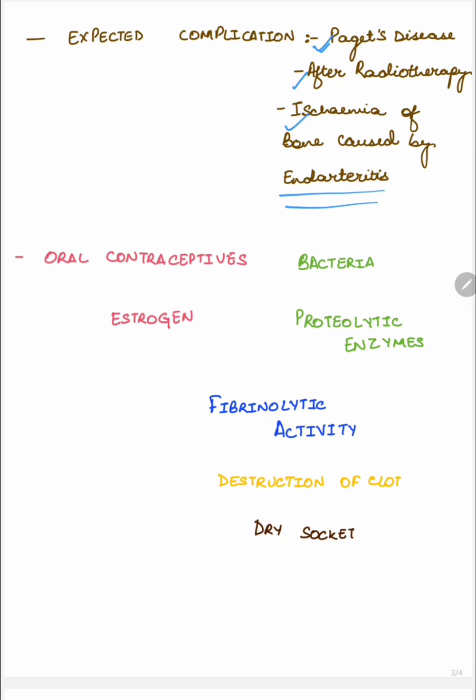What if the woman is on oral contraceptives? The oral contraceptives will release estrogen which is having fibrinolytic activity. Same occurs when bacteria are accumulated inside the socket. The bacteria will release proteolytic enzymes, and these enzymes are also having fibrinolytic activity. This will disintegrate the clot, which will lead to the formation of dry socket.